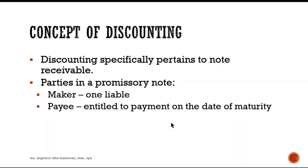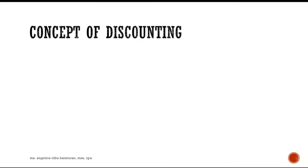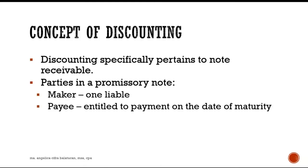When a note is negotiable, the payee may obtain cash before maturity by discounting the note at a bank or other financing company. So the payee can advance and get the money in case the maker has not yet paid. The payee can get an advance by discounting the note.